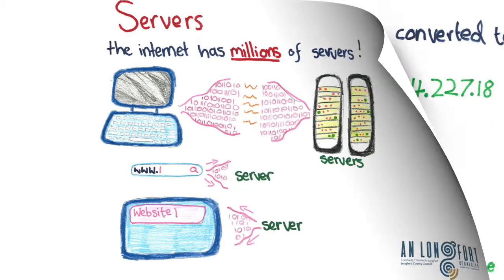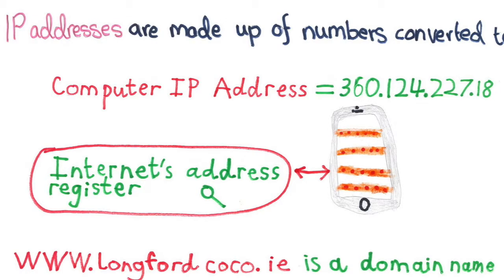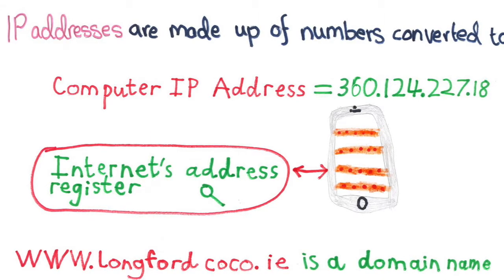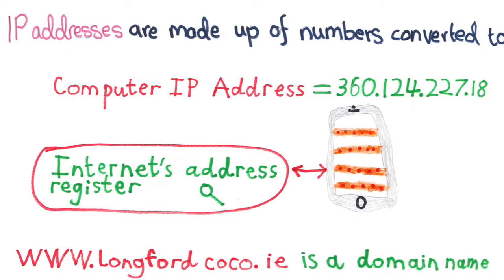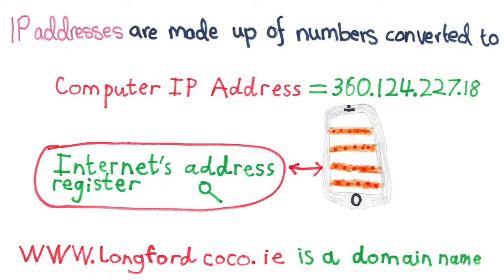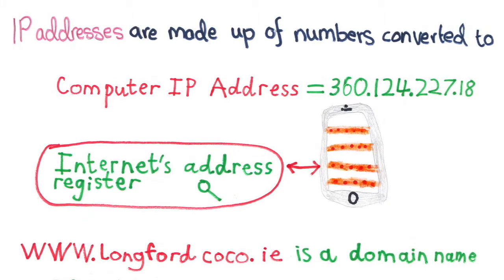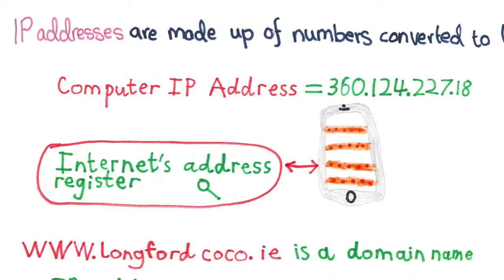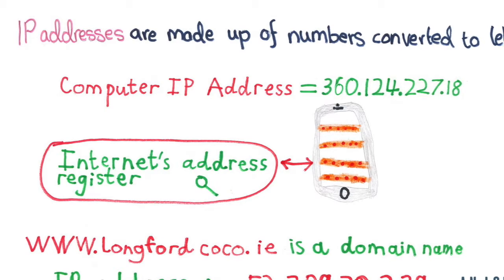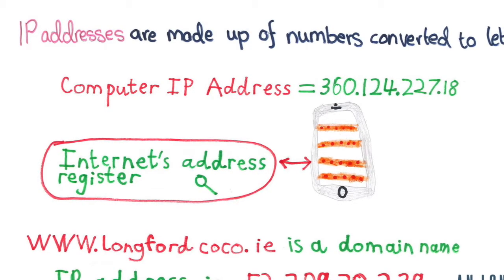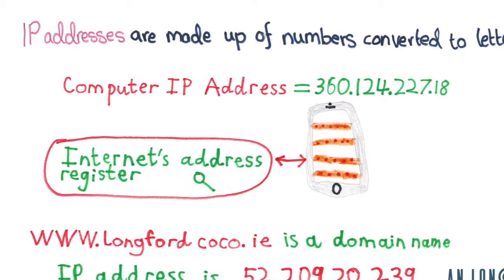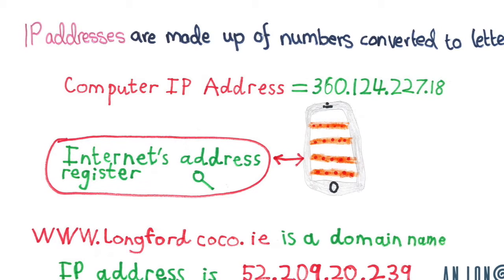What is an IP address? All devices connected to the internet have their own address. For example, all our homes have an Eircode, so it's easy to find where you live. Internet addresses are called IP addresses, and they are made up of numbers. For example, your computer's IP address could be 360.124.227.18, and www.longfordco.ie's IP address is 52.209.20.239.